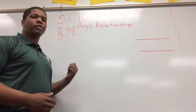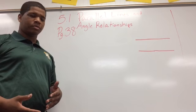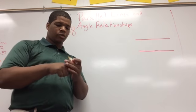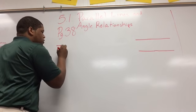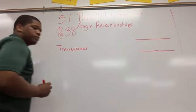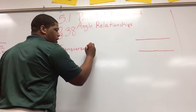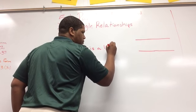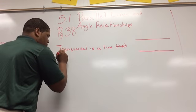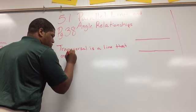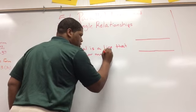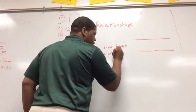Okay class, today we're going to be talking about parallel lines and angle relationships. The first thing we need to do is write down a couple of definitions. The first word we have is transversal. A transversal is a line that crosses two or more other lines.